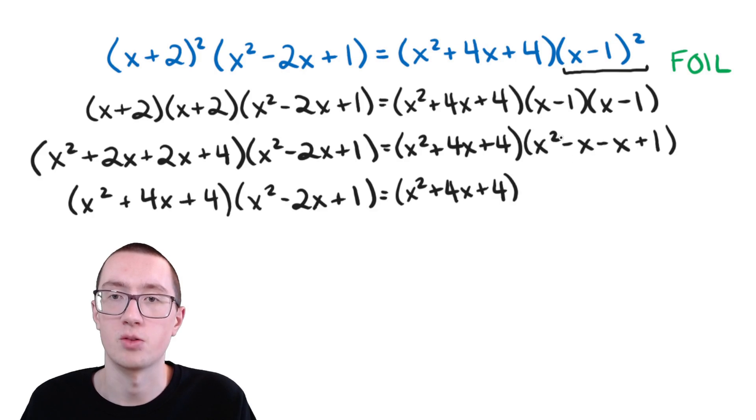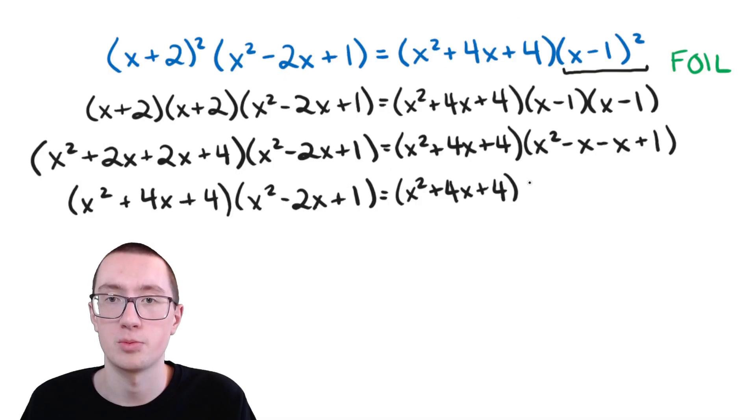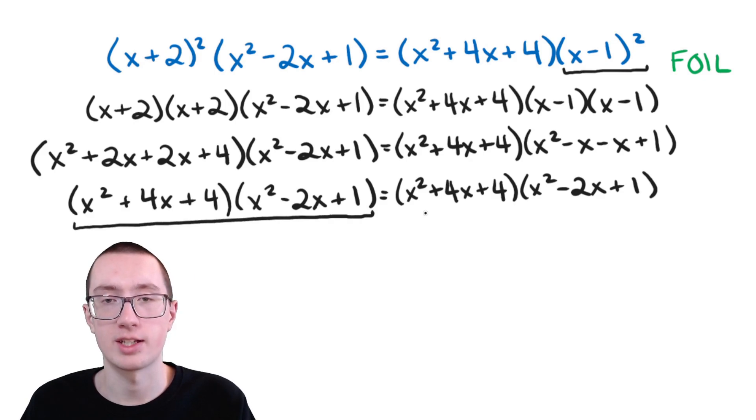And then we have like terms here. We're subtracting an x, and then subtracting another x. So in total, we're subtracting two x's. So we're going to have minus 2x plus 1. And now both the left side and the right side look exactly the same, as you can see here. So that means we have successfully proven this polynomial identity.